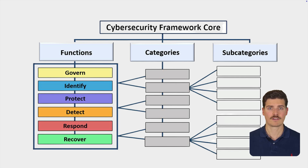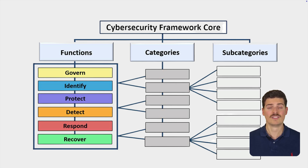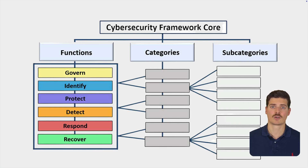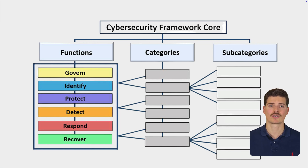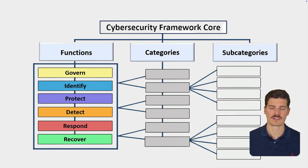For example, in the Protect function there is a category focused on controlling who has access to our systems. Then, to get even more specific, each category is broken down into subcategories. Subcategories tell us exactly what outcomes we should aim for. It's basically like having a detailed checklist under each category to make sure we cover everything important and don't overlook something that should be put into consideration.